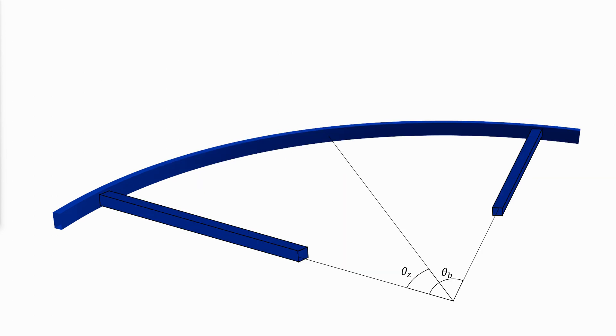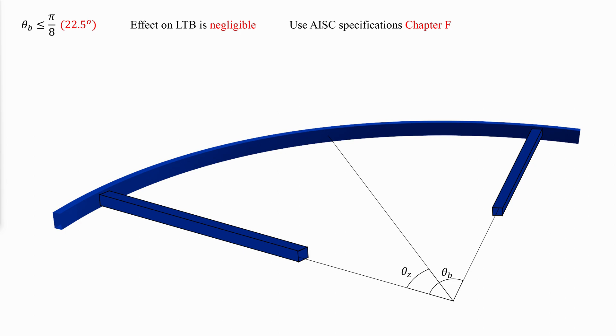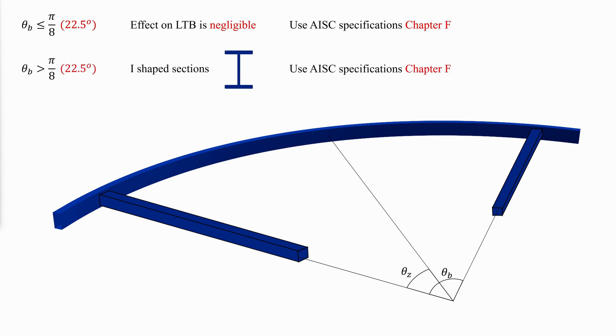When evaluating the flexural strength, the local buckling provisions in AISC Specification Chapter B are applicable to horizontally curved beams without modification. As with straight beams, the flexural strength of curved beams is reduced for members susceptible to lateral torsional buckling. Because closed sections have high torsional rigidity, they are typically not subject to lateral torsional buckling. The effect of curvature on the lateral torsional buckling strength is negligible when the angle between torsional restraints theta_b is equal to or less than pi over 8, in which case AISC Specification Chapter F is applicable.